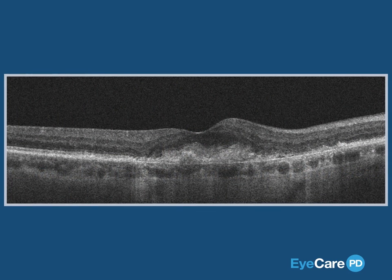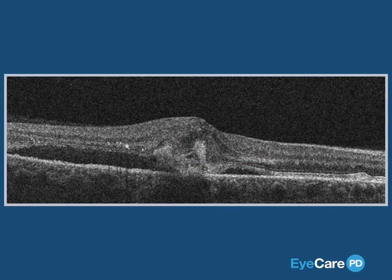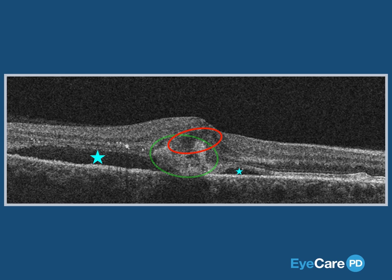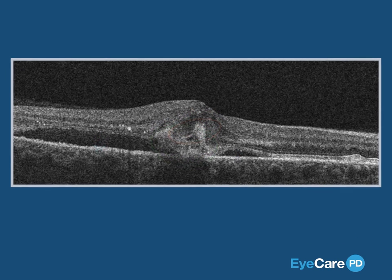Active choroidal neovascularization will have a handful of OCT features typically present. Sometimes you will only notice amorphous subretinal hyperreflective material, as seen here. Though sometimes you will notice many more features such as subretinal fluid, amorphous subretinal hyperreflective material, and a small amount of intraretinal fluid. All of these findings indicate active choroidal neovascularization, or simply put, active disease.